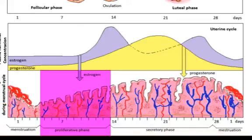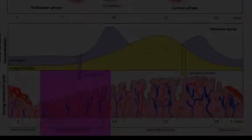The proliferative phase follows: as estrogen levels rise, the endometrium rebuilds itself in preparation for another fertilized egg, if that were to happen.